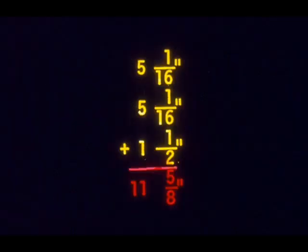Now we'll add up the figures we've marked off: five and one-sixteenths, plus one and a half, plus five and one-sixteenths. The total is eleven and five-eighths. Even though both legs of the bend measured six inches from the end to the center of the bend, we did not need a full twelve inches of tubing — all we needed was eleven and five-eighths.